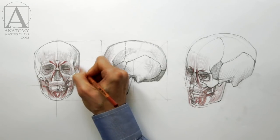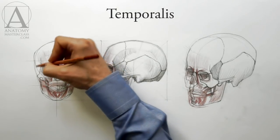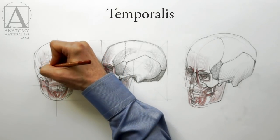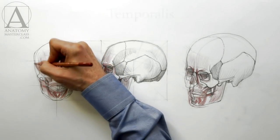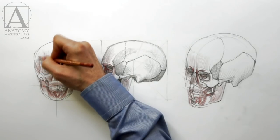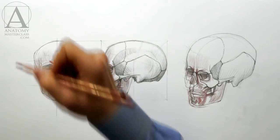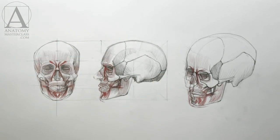The fan-shaped muscle on the side of the head is called the temporalis. It is a powerful, flat muscle that pulls the lower jaw upward. Usually it is covered by hair, but on a bald head it is easily discernible, especially when a person is chewing.